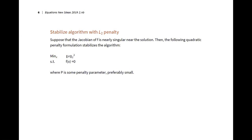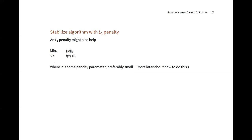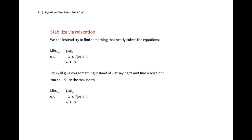You could also use a proximal point approach, include bounds on X, and so on. This is another example where the L1 penalty can help. Suppose you don't have much idea about the solution and you don't trust your code — write down a problem you know has a solution and see what happens. We want to minimize some objective where the lambdas are all non-negative; the L1 penalty is the sum of the lambdas.